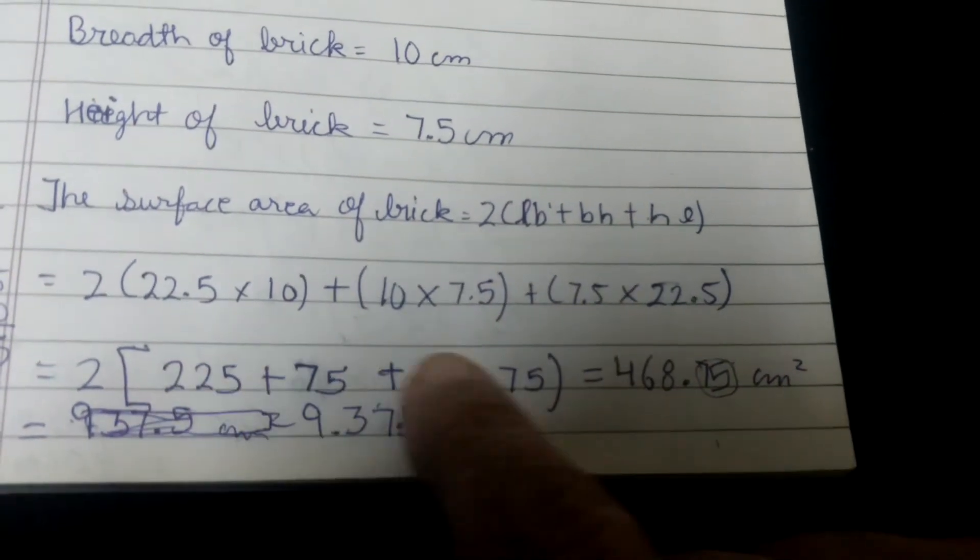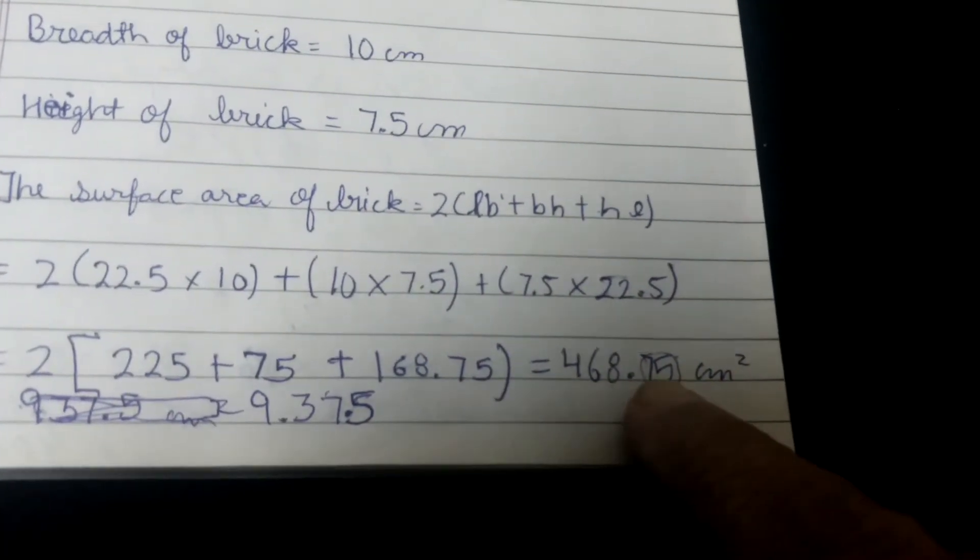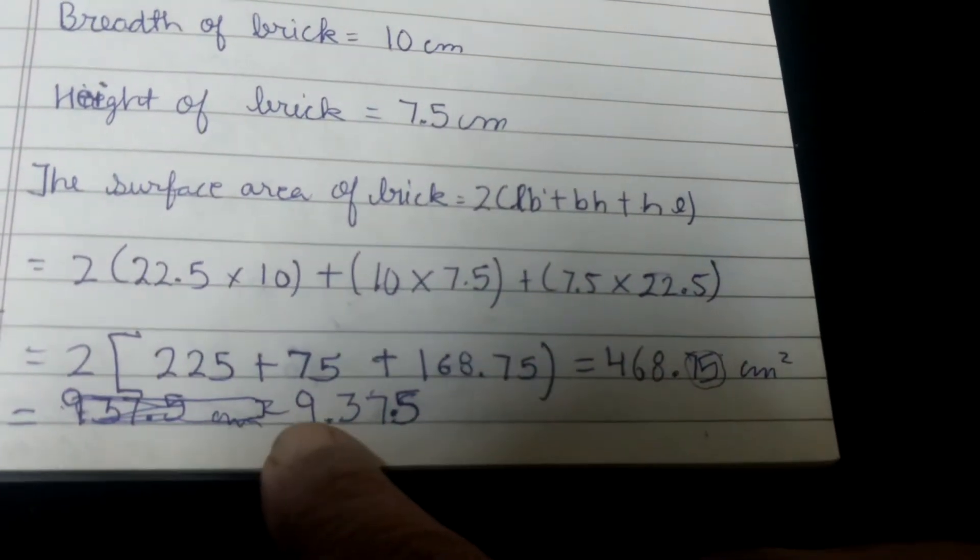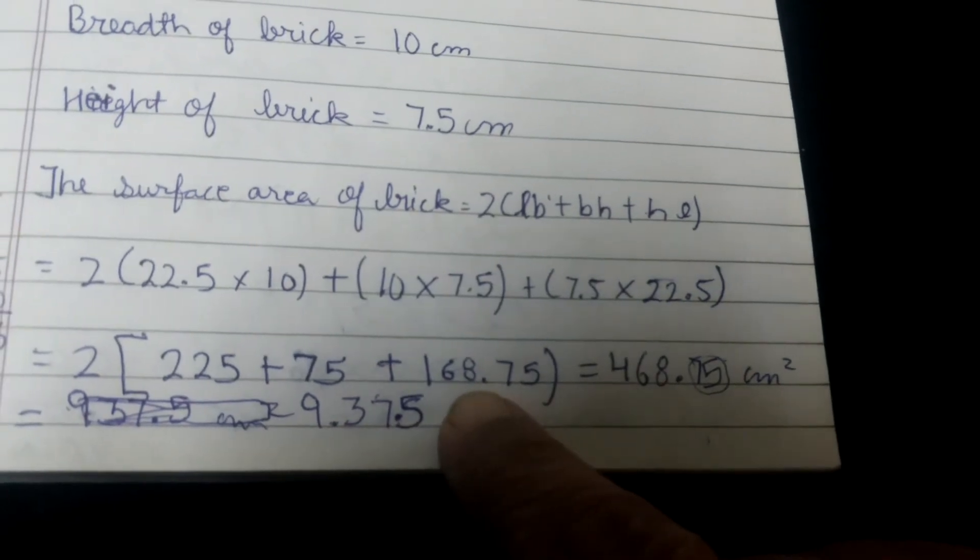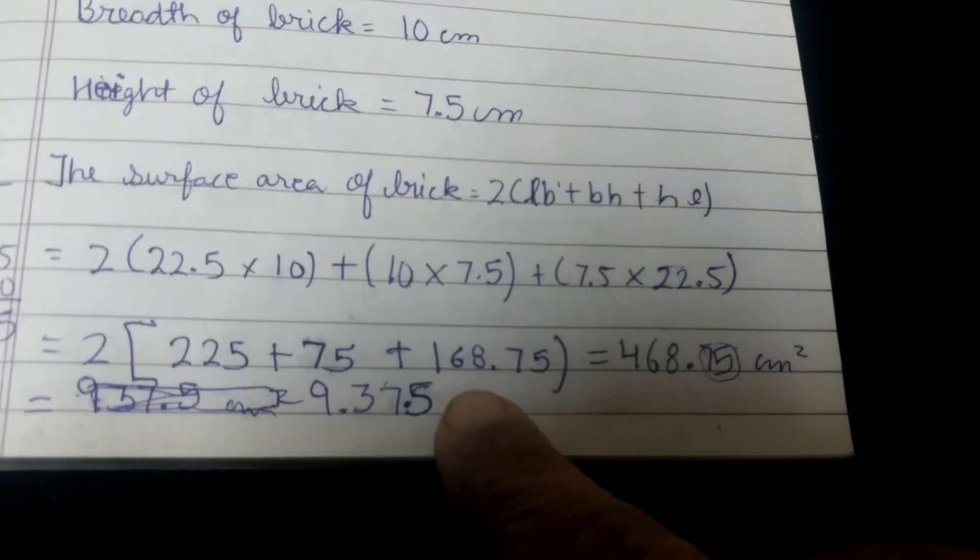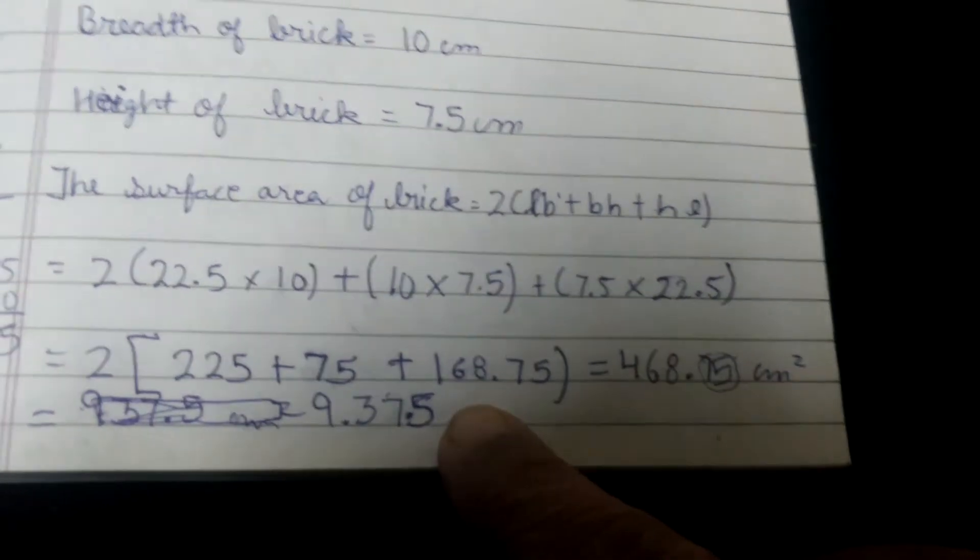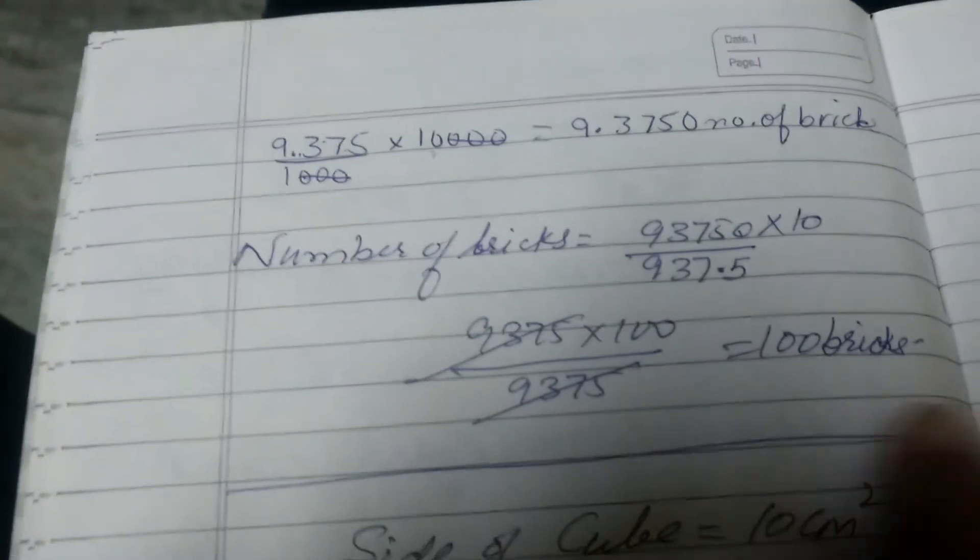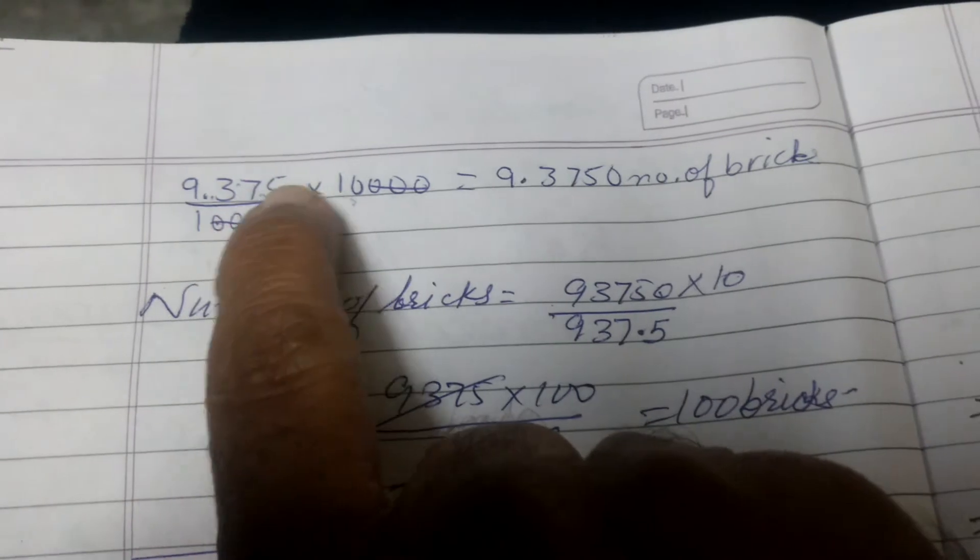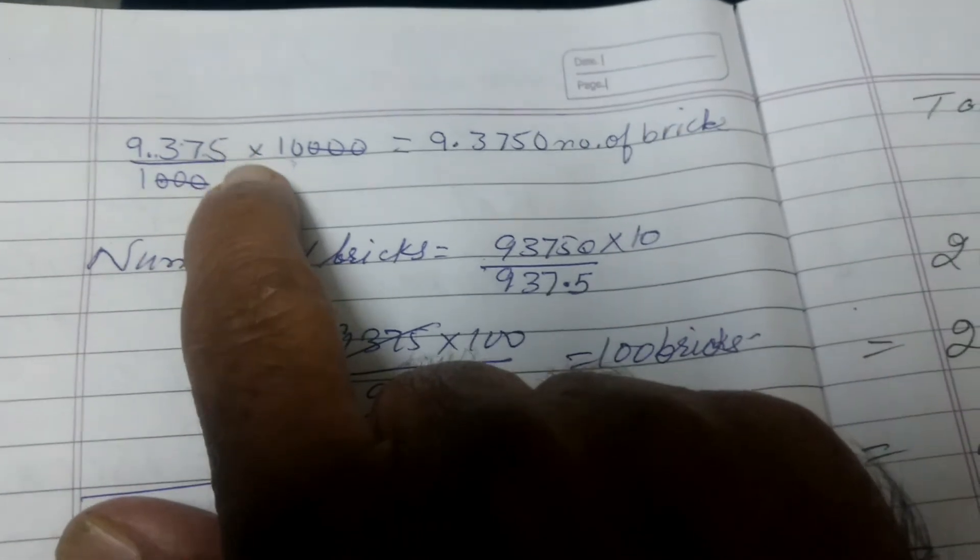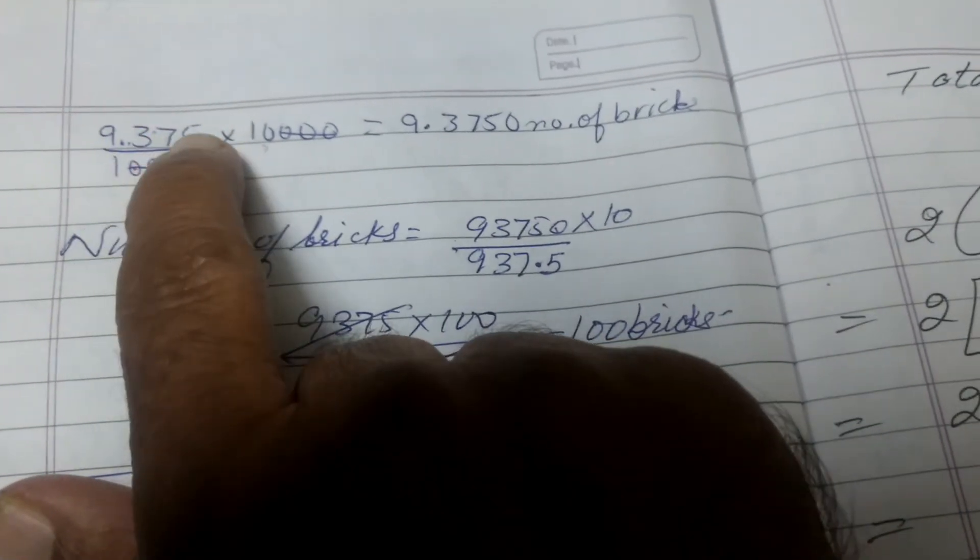This is 168.75. Adding them gives 468.75. So 2 multiplied by this gives 937.5. This is in centimeter square. So the surface area is 937.5 centimeter square.